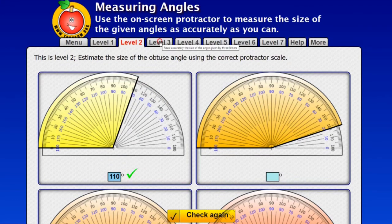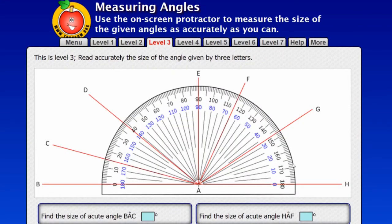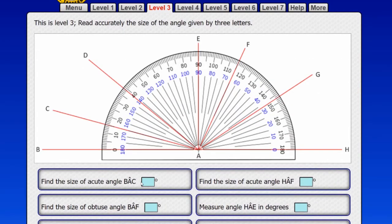Right, let's go on to level 3. Right, what we need to do here is read from the big protractor here the size of the angles required in the question. So first of all, find the size of acute angle BAC. There's B, there's A, and there's C. So here I can see these two lines make an acute angle here. So I'm going to start off on the black scale because that starts at 0 on one of the arms of the angles. Count round 10, 15 degrees. I think that is 15 degrees.